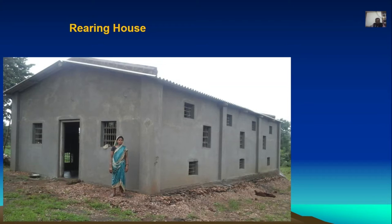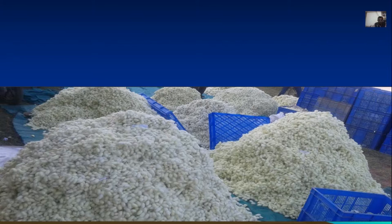This is the newly built 3-tier rearing house with ventilations, which are very important for rearing silkworms. The tribal women have built this rearing house for silkworm rearing. This shows the production of white cocoons — double hybrid bivoltine cocoons.